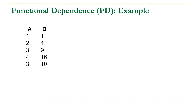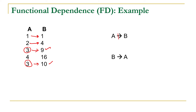Let us consider another relation R having two attributes A and B. Give a thought about the functional dependence between A to B and B to A. When A is 1, B is 1. When A is 2, B is 4. When A is 3, we have multiple values of B: 9 and 10. For a given value of A, we are getting multiple values of B, so A is not functionally determining B in this case.